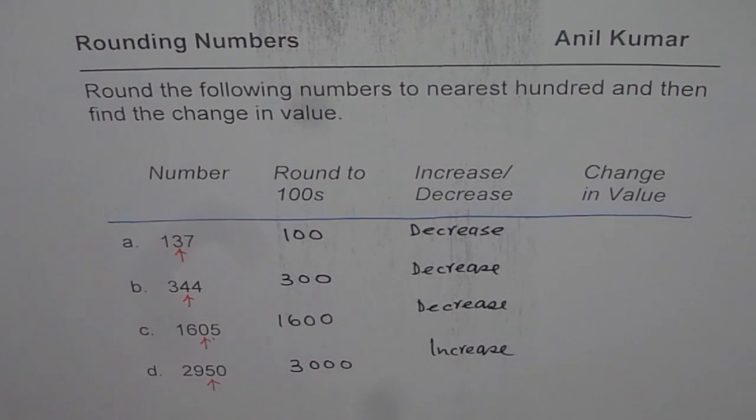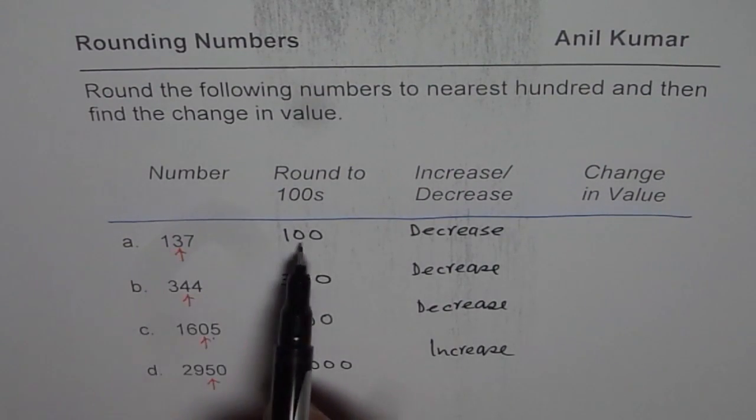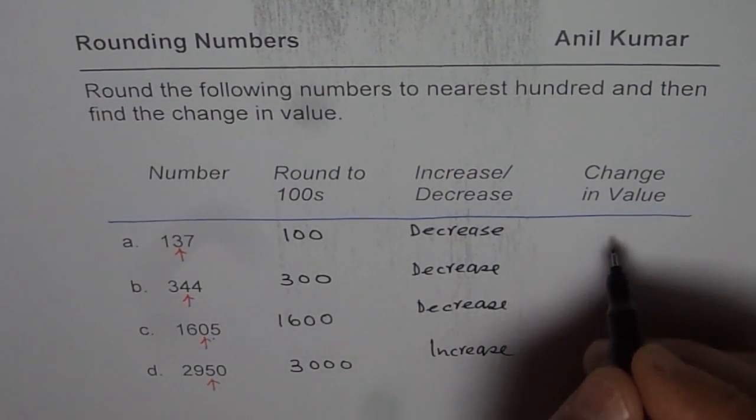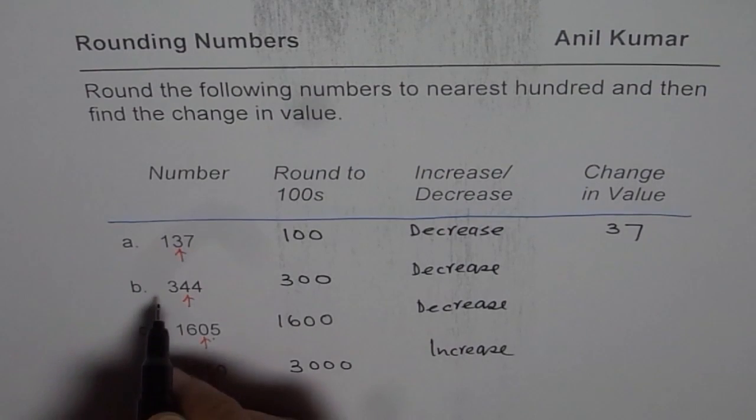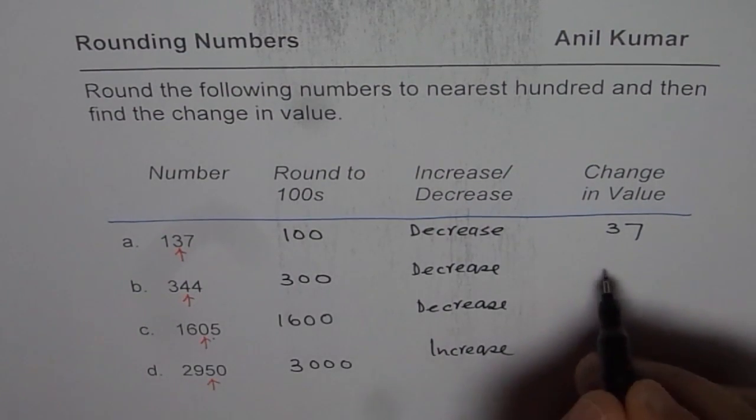Now let us find the change. Change is difference between these two. 137 take away 100 is 37. 344 take away 300 is 44.